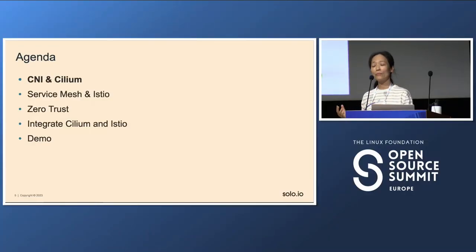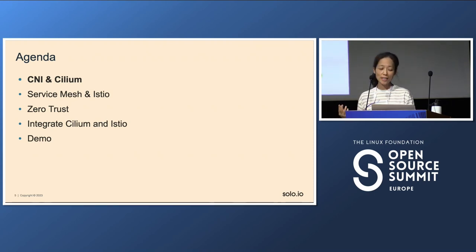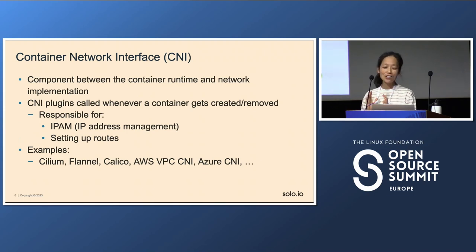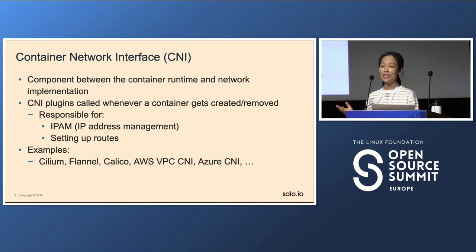So with that, we're going to talk about today's agenda. We're going to talk a little bit about CNI and Cilium first, and then we're going to dive into some background around service mesh and Istio, and then we're going to talk about best practices for implementing zero trust architecture, what zero trust is, and how to integrate Cilium and Istio together — and we're going to do a show and tell through a demo.